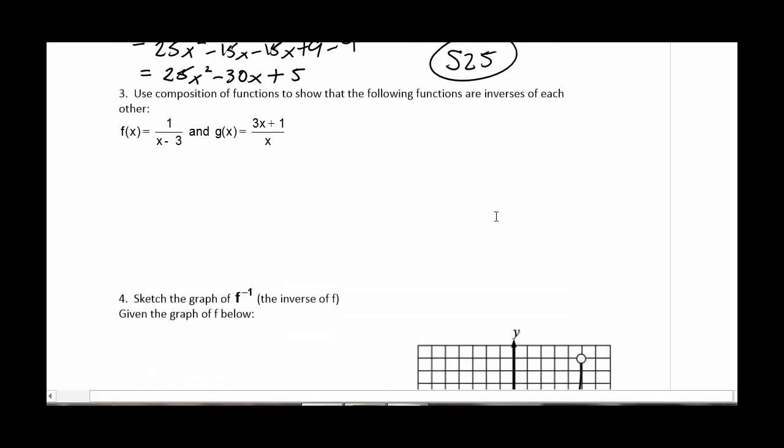Number three, we're asked to use composition of functions to show that the following are inverses of each other. So what that means is I want to do f of g of x and then I want to flip the order around and do g of f of x and see if they both reduce down to x. Okay, so in this case f is on the outside. So 1 over something minus 3. And so what do I fill in that hole with? I should fill it in with g. So 3x plus 1 over x.